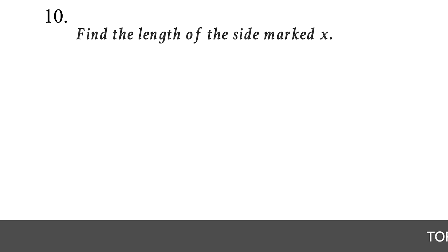Question 34. Find x in the diagram. Identify that this involves angles on a straight line — they add up to 180 degrees. Add all the angles and equate to 180: 75 + x + 20 + 25 = 180. Combining numbers: x + 120 = 180. Subtract 120 from both sides: x = 60 degrees.